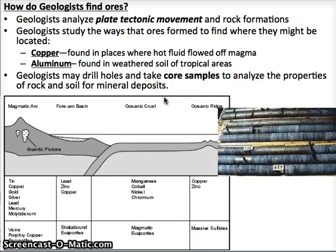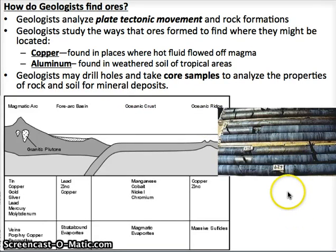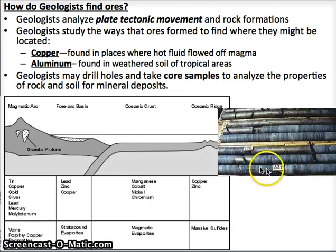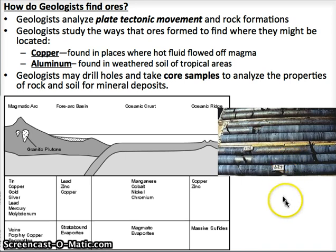Another method is core sampling, where geologists drill a hole in a certain area and study the profile of the rock and soils to identify minerals. They do this not only for petroleum but also for minerals and rocks. Here's a picture of a core sample.